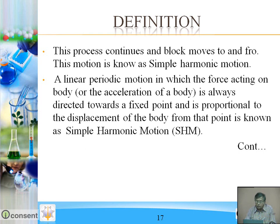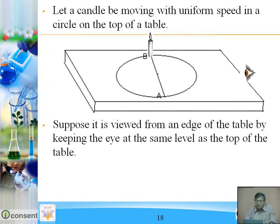Simple harmonic motion is a linear periodic motion in which the force acting on the body — or acceleration of the body, since force equals mass times acceleration and mass is constant — is always directed towards a fixed point and is proportional to the displacement of the body from that point. This is known as simple harmonic motion, denoted by SHM. Now let's see one more example of SHM.